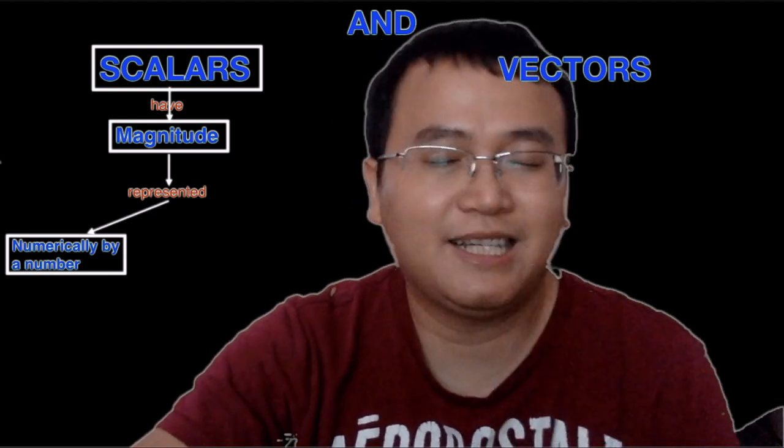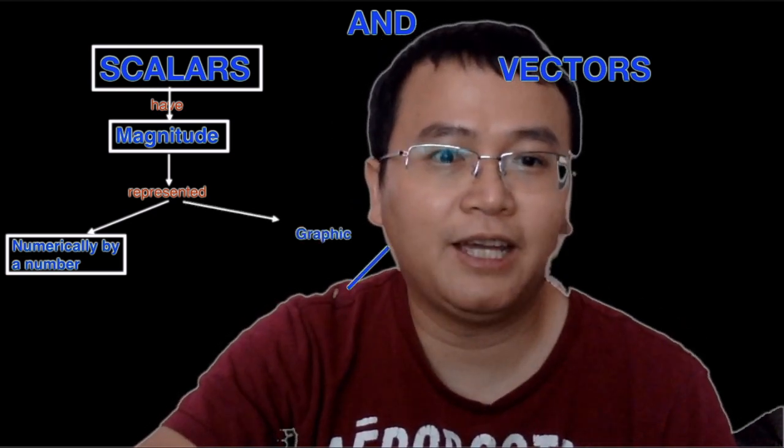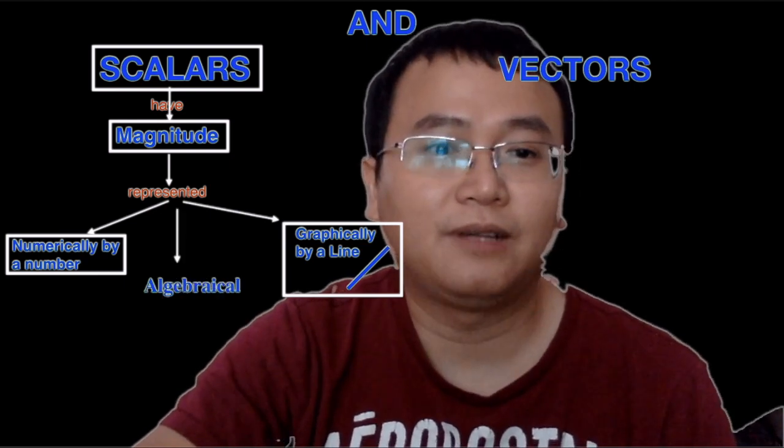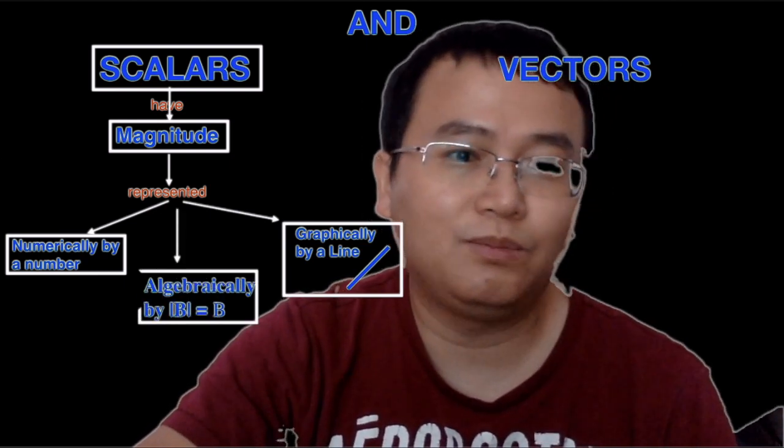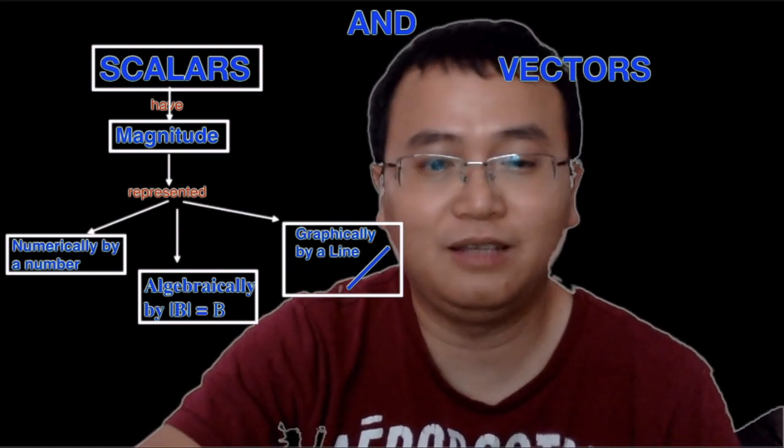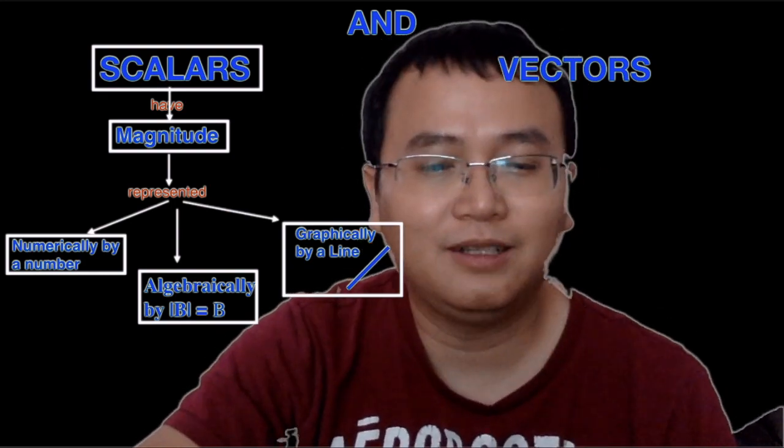Five, six, seven. And graphically you represent it by a line. Algebraically it's just a non-boldfaced symbol like a letter B or C or D or E or any symbol.